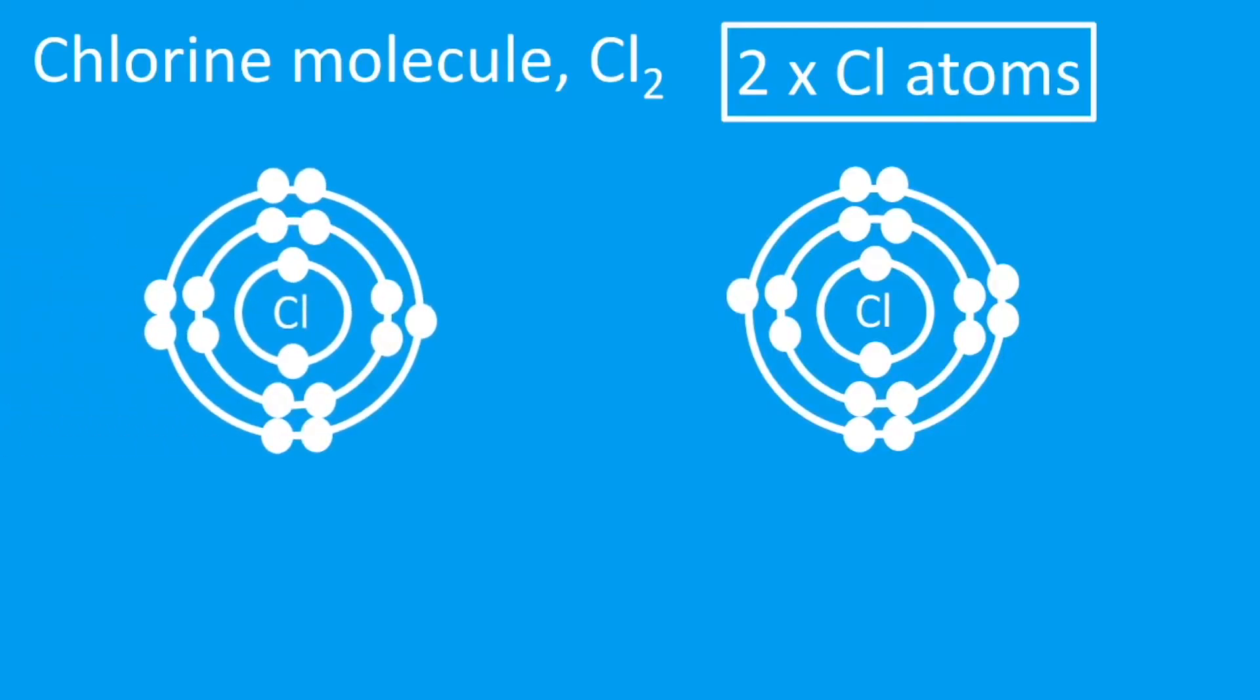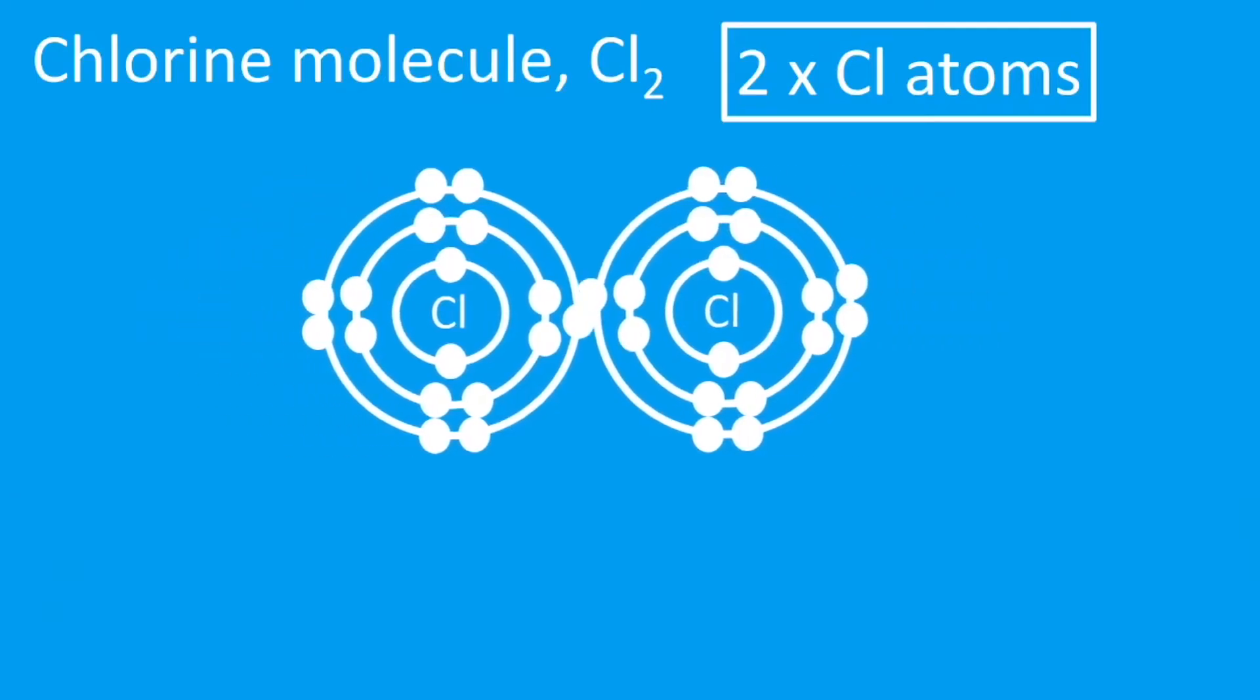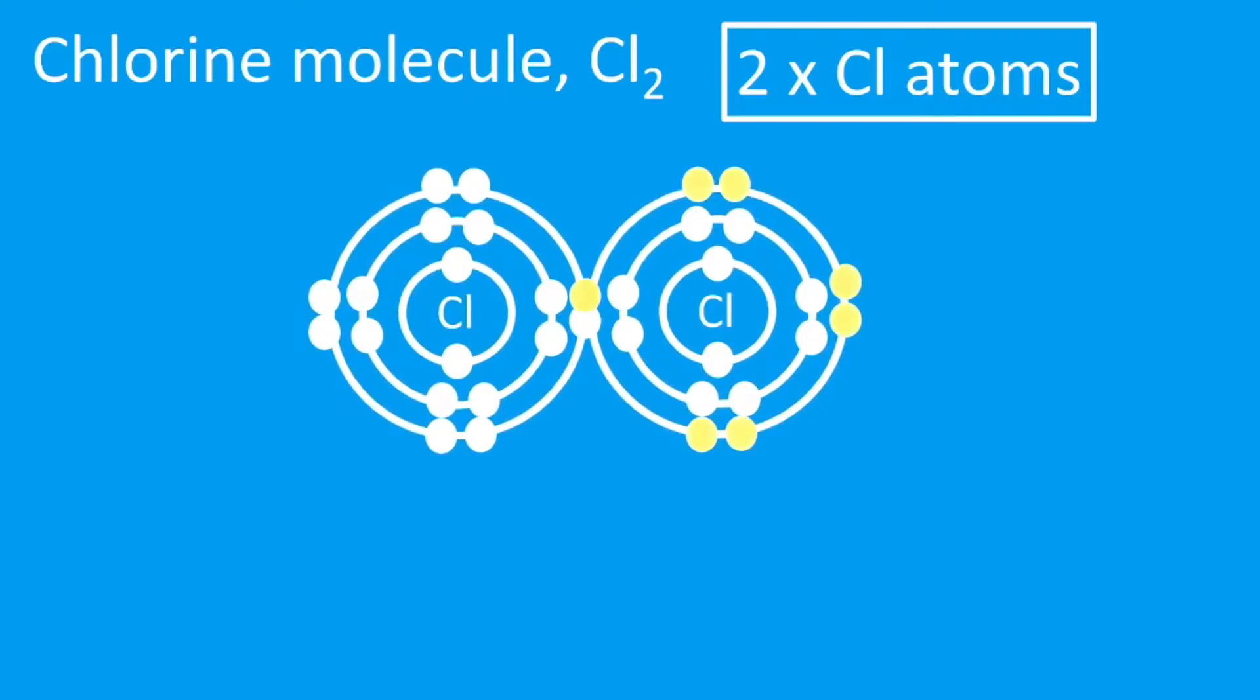Now what's going to happen here is they have seven electrons—they are both one electron short of a full outer shell, so it will form one covalent bond. So there we have here, the chlorine on the right had its original seven electrons, but because it's sharing, it's effectively gained an electron from the one on the left, so it's now got eight outer electrons.